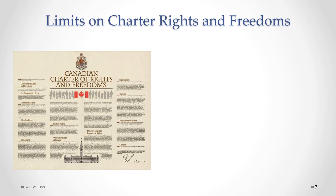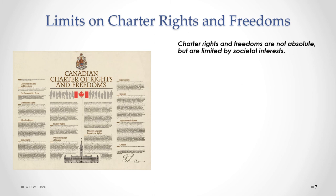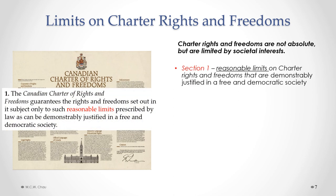Let's now look more specifically at those limits on Charter rights and freedoms. The main legal mechanism to express societal interests and to limit individual interests guaranteed in the Charter is through Section 1. Section 1 of the Charter says that the Charter guarantees the rights and freedoms set out in it. There are a lot of cases that have been decided in applying the Charter that show us how the courts determine what is considered to be a reasonable limit of a Charter right or freedom. We'll look at one of those cases in a few moments, which is the Irwin Toy case.